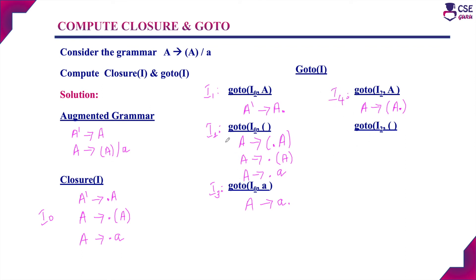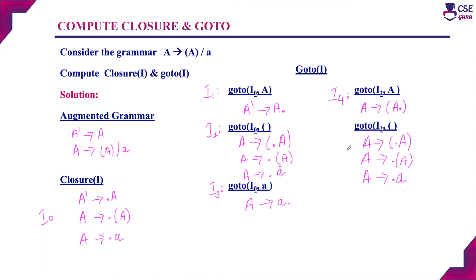Next, we perform a move on state I2 with symbol open bracket: A derives open bracket dot A closed bracket. Since after the dot symbol a non-terminal A is there, we have to add the A productions: A derives dot open bracket, and A derives dot terminal A. This new state is similar to state I2, so it is nothing but I2 state — we cannot name a new state since it is already available. Next, performing a move on terminal symbol A gives A derives A dot, which is also similar to state I3. So we cannot name this new state either. Now I2 state is over.